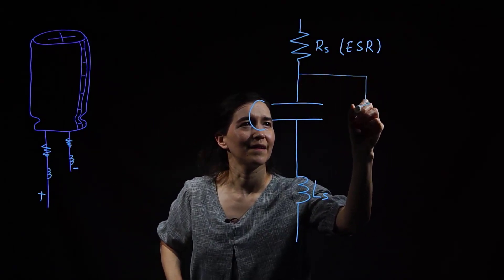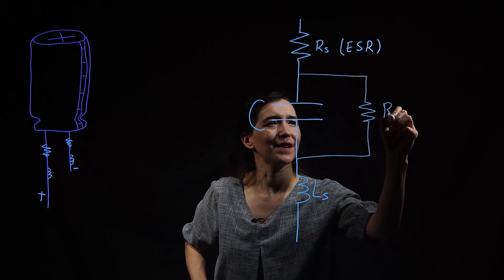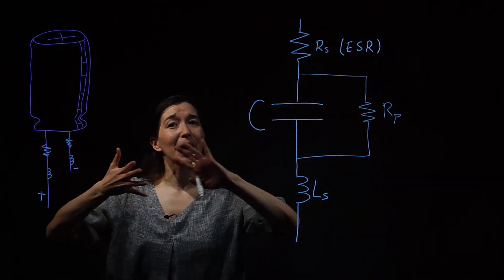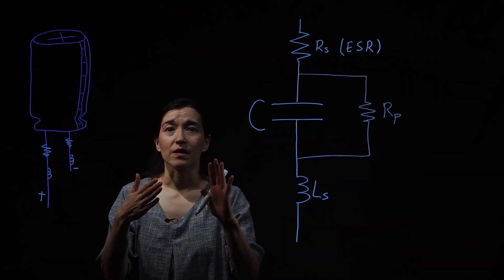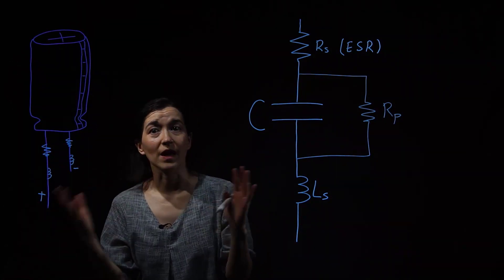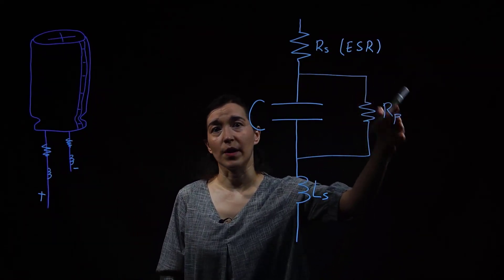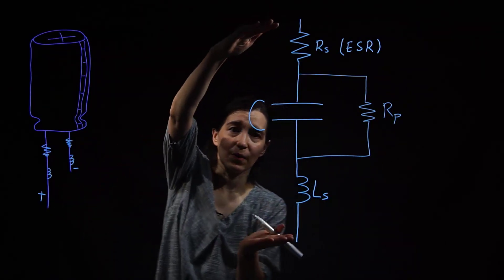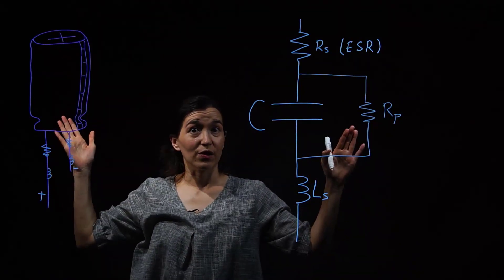So inside of the body of this, the plates are not perfectly isolated. There is going to be some charge that will go from one side to the other. And so that is modeled with this parallel resistance. So even if we completely disconnect it, say we put a voltage source here, and then we disconnect it. There's nowhere for the current to flow, right?